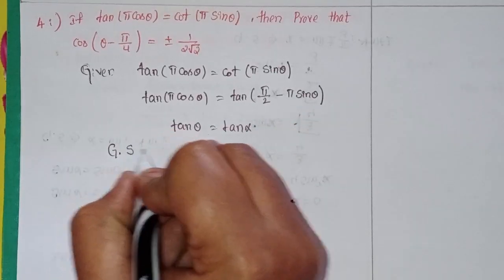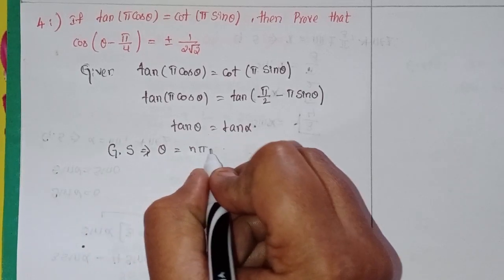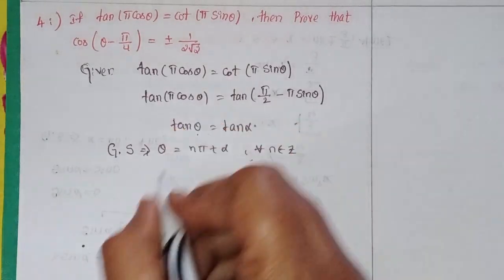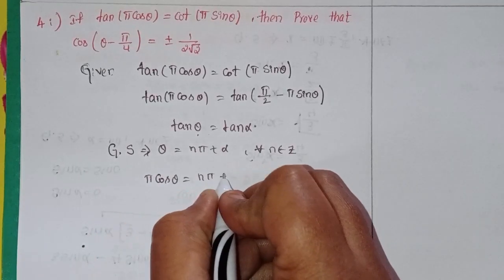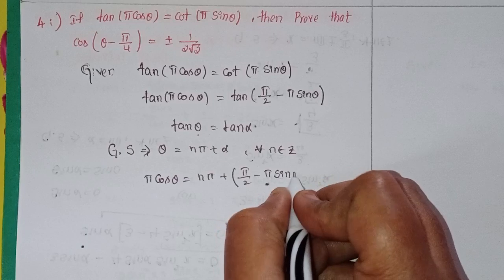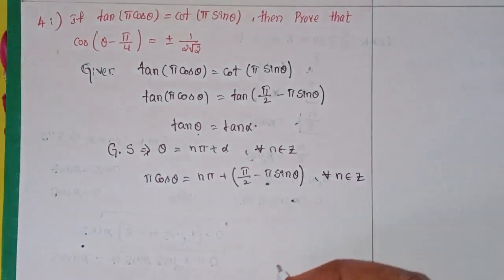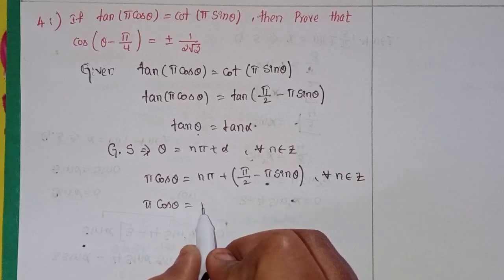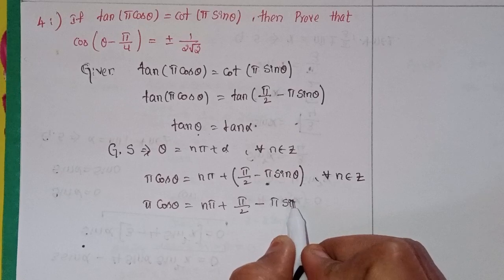Applying the general solution: θ = nπ + α for all n belonging to Z. So π·cosθ = nπ + α, where α = π/2 − π·sinθ. Therefore: π·cosθ = nπ + π/2 − π·sinθ, for all n belonging to Z.